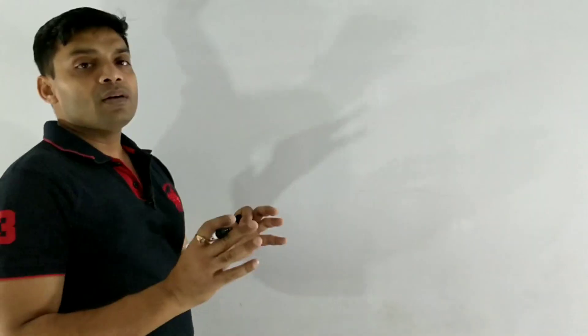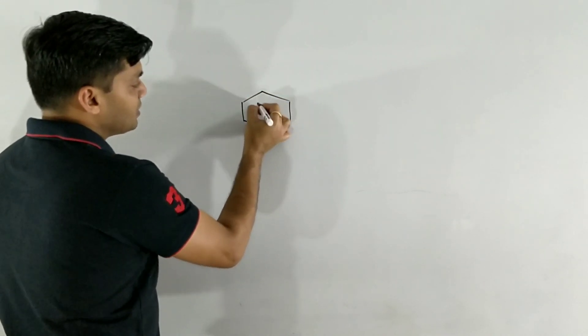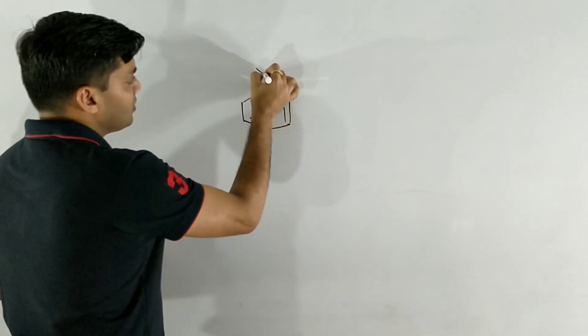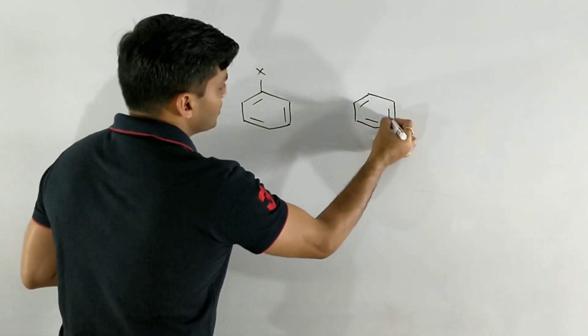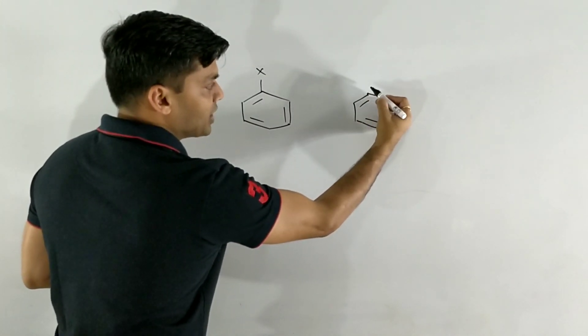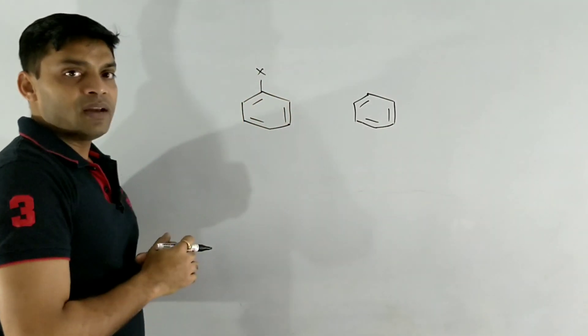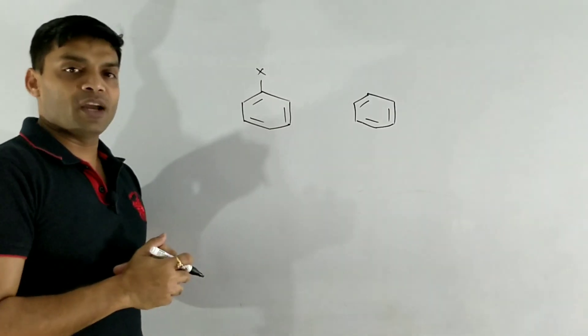So if we discuss aryl halides with respect to their parent hydrocarbon, we compare their boiling points relative to that parent hydrocarbon. Remember that the parent hydrocarbon of any aryl halide is benzene. So we are supposed to compare the boiling point of any aryl halide with respect to benzene, and find out whether aryl halides are higher or lower boiling than benzene.